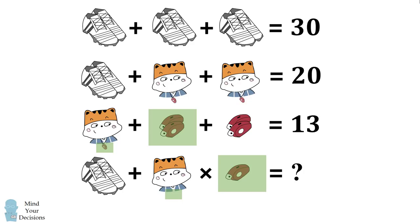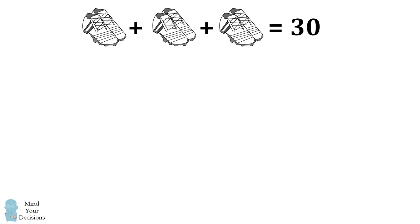So let's solve each equation. We start out where we have a pair of shoes, plus a pair of shoes, plus another pair of shoes, which equals 30. So we have three pairs of shoes, which equals 30. This means that a single pair of shoes is equal to 30 divided by 3, which equals 10.